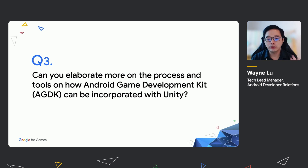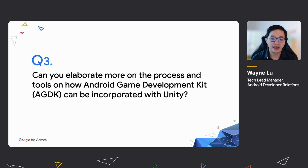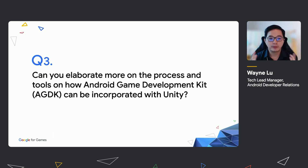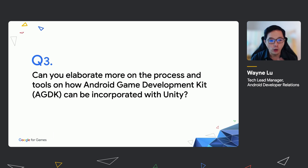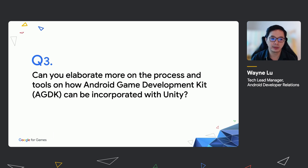For question number three, can you elaborate more about the process and the different tools on how AGDK can be incorporated with Unity? AGDK consists of multiple different game libraries — for example, Game Activity, Game Controller, Game Text Input, Oboe Audio Library, Frame Pacing, and Android Performance Tuner. These different game libraries allow you to build or customize your game engine in C or C++.